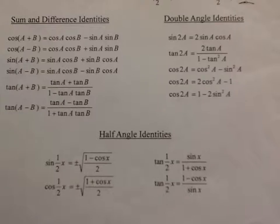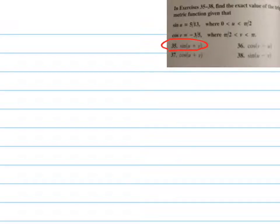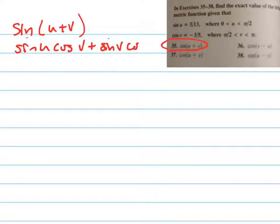Let's do number 35, the sine of u plus v. Remember, the sine of u plus v, if we look at our little cheat sheet, is right here. So it's the sine of u times the cosine of v plus the sine of v times the cosine of u. So sine of u plus v equals the sine of u cosine of v plus sine of v cosine of u.